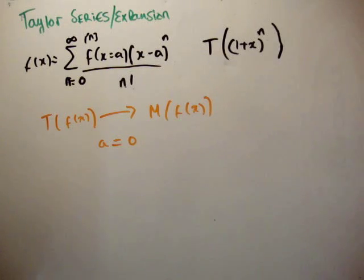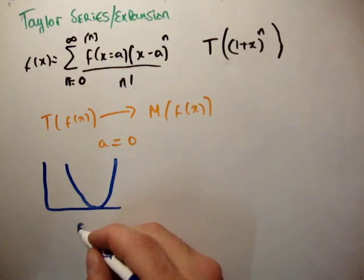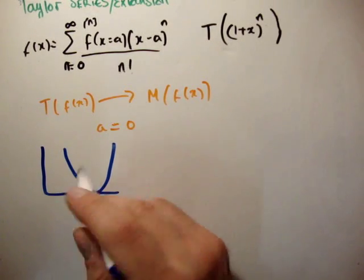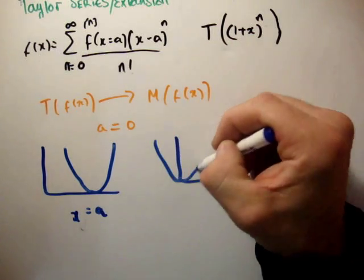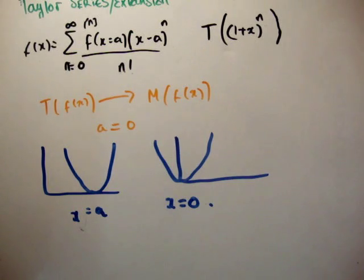So really the difference between the Taylor and the McLaren series is that the Taylor series can be expanded anywhere we like, or centered anywhere we like. That's supposed to be x is equal to a. Whereas the McLaren series must be centered at x is equal to 0. That's the difference between the Taylor and McLaren series.